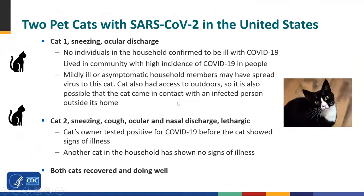Here's more detail about the pet cats. Cat one had sneezing and ocular discharge. Cat two had sneezing, coughing, ocular and nasal discharge, and was lethargic. For the first cat, exposure is less clear — there were no COVID-positive individuals in the household, although they lived in a community with high incidence and the cat was indoor-outdoor. The second cat's owner was confirmed positive for COVID-19. There was another cat in that household that showed no signs of illness. Both cats have recovered and are doing well.